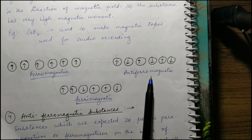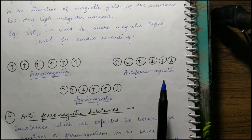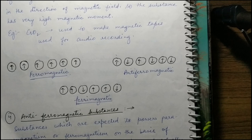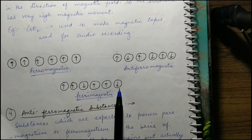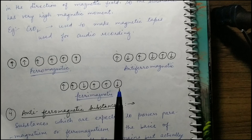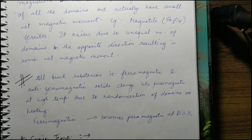The last type is ferrimagnetic — where the net magnetic moment is expected to be large but turns out to be smaller, because some arrows are upward and some are downward. They do not fully cancel (unlike antiferromagnetic), but some partial cancellation occurs. For example, if four arrows are upward and two are downward, two cancel out, so the net magnetic moment is reduced.